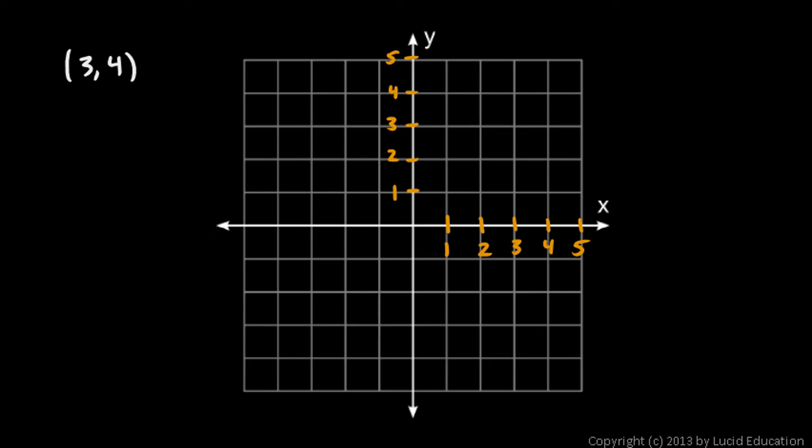Okay, first of all, this is an ordered pair, x first, and then y. So the 3 is the x value, the 4 is the y value. And we start at the origin, and we're going to go over 3, that's 3 in the x direction, and then up 4.